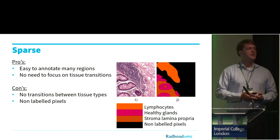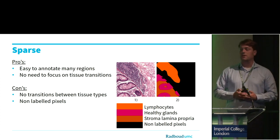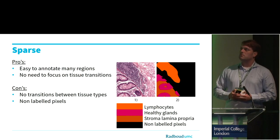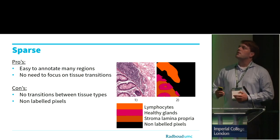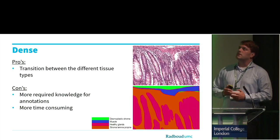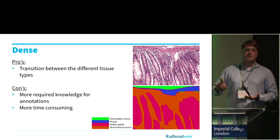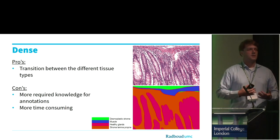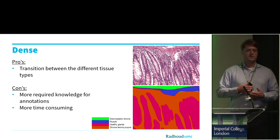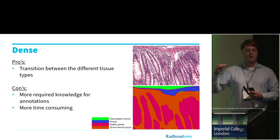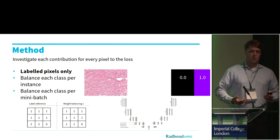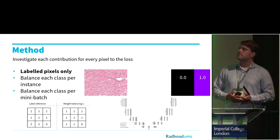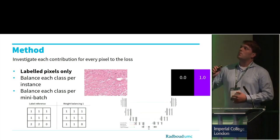There are also many non-annotated pixels in the training set. To overcome this issue, we can use a dense dataset where we have transitions between different tissue types. However, this requires more knowledge to define the border between tissue types and is of course more label-intensive.